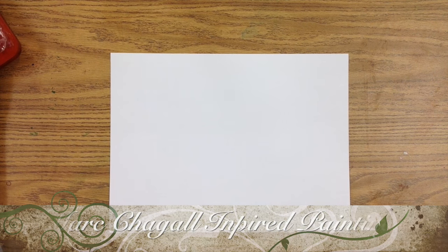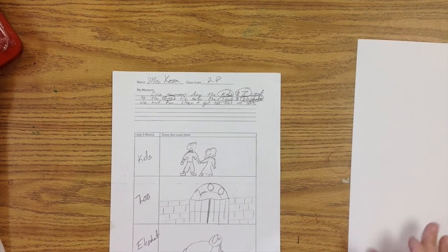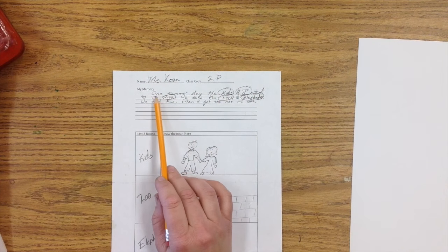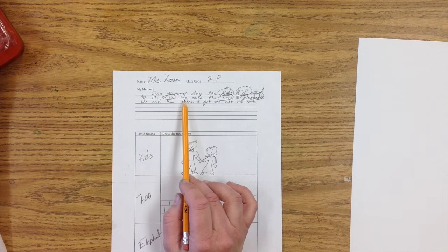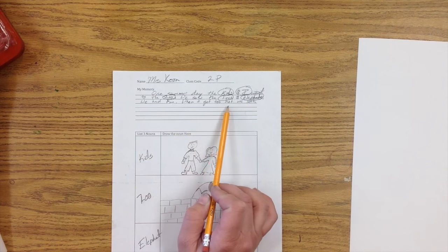All right, so we're making artwork like Marc Chagall. Last week what we did was we have this worksheet here and we wrote a memory. So the memory I wrote was one summer day the kids and I went to the zoo. We saw the lions and elephants and we had fun. When it got too hot, we left.